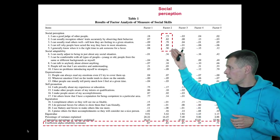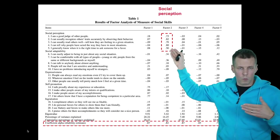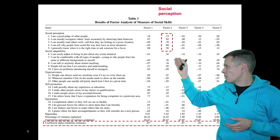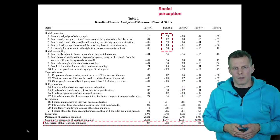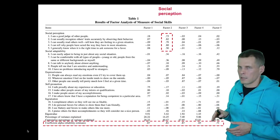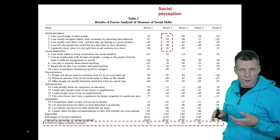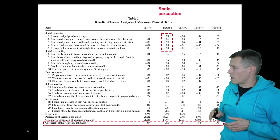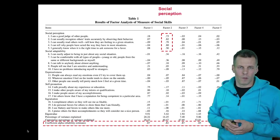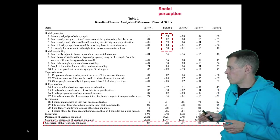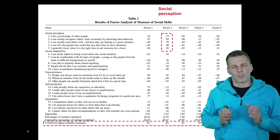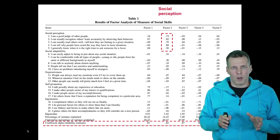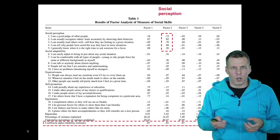You look at every item — every question should load on just one factor, and the factor loading should be above 0.7. Some are a bit low, but most are above 0.7. There are also reliability statistics — coefficient alpha, sometimes called Cronbach's alpha — commonly found in this table. The commonly used cutoff rule of thumb is 0.7, and these are in the 0.8 ballpark, so reliability seems pretty good. Based on this table, we conclude that these survey questions are reliable and valid measures of whatever they are supposed to measure.